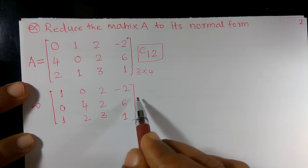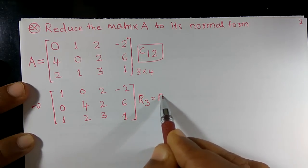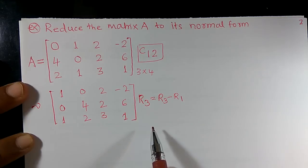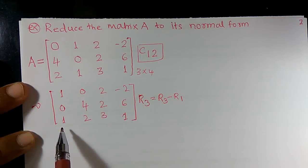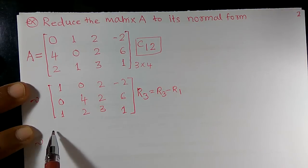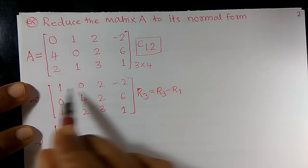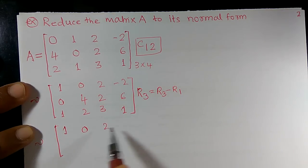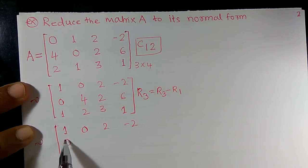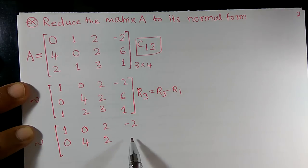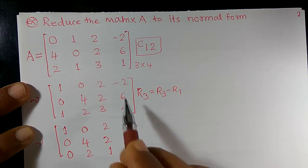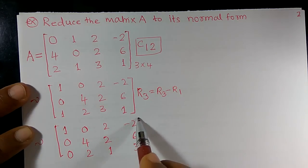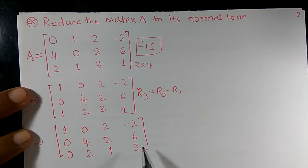Now I want to apply the operator R3 = R3 − R1. R3 is the third row and R1 is the first row. The first and second rows remain the same: [1, 0, 2, −2] and [0, 4, 2, 6]. For R3: 1−1=0, 2−0=2, 3−2=1, and 1−(−2)=3. I obtain the equivalent matrix.